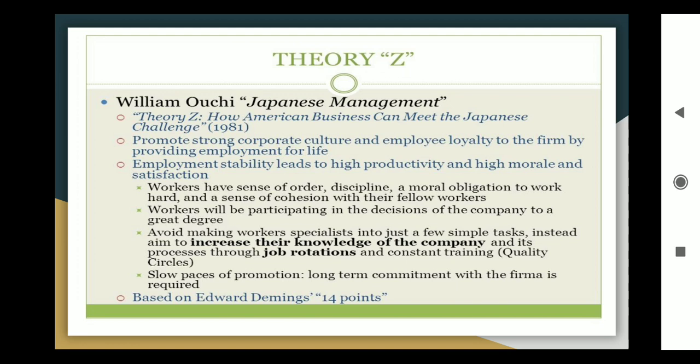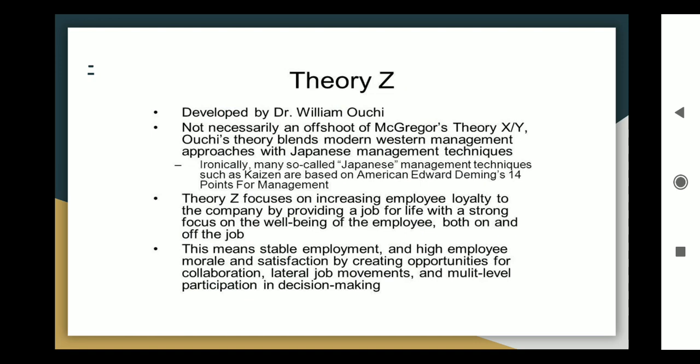Theory Z also involves slow paces of promotion with long-term commitment to the firm. This theory was influenced by Edward Deming's 14 points. Ouchi's Theory Z blends modern Western management approaches with Japanese management techniques. Ironically, many so-called Japanese management techniques such as Kaizen are based on American ideas, specifically Edward Deming's 14 points for management.